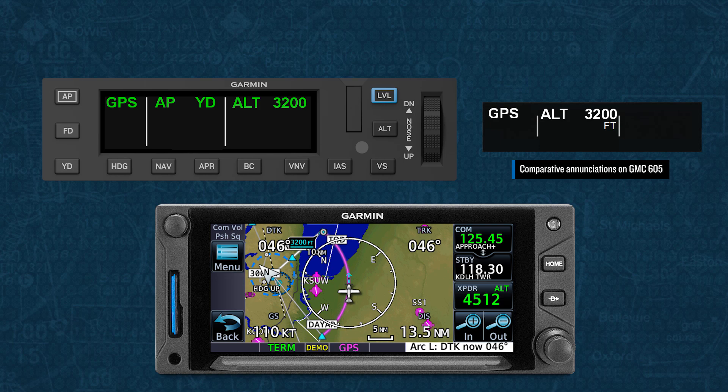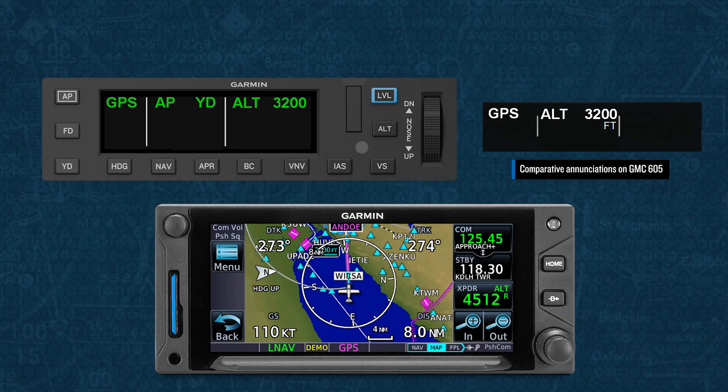As we progress on the arc, ATC clears us to intercept the inbound course. Since GPS is the active mode, we know that the autopilot will track the inbound course, so no change is required at this point. Once we're established on the inbound course, ATC clears us for the approach, and that is our trigger for arming the approach.